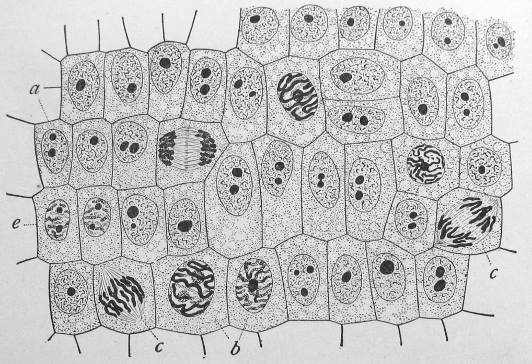The cytoskeleton acts to organize and maintain the cell's shape, anchors organelles in place, helps during endocytosis, the uptake of external materials by a cell, and cytokinesis, the separation of daughter cells after cell division, and moves parts of the cell in processes of growth and mobility. The eukaryotic cytoskeleton is composed of microfilaments, intermediate filaments and microtubules. The prokaryotic cytoskeleton is less well studied but is involved in the maintenance of cell shape, polarity and cytokinesis.